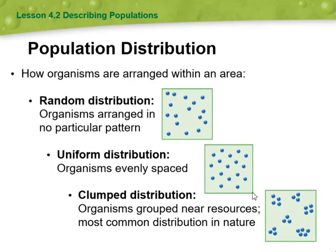Then we're going to talk about population distribution. We have three types of population distribution: random, uniform, and clumped distribution. Random distribution means organisms are arranged in no particular pattern, while uniform distribution means organisms are evenly spaced.